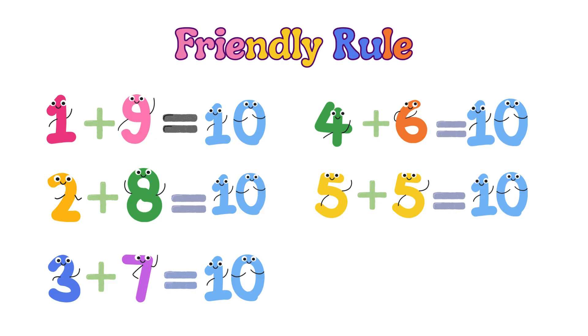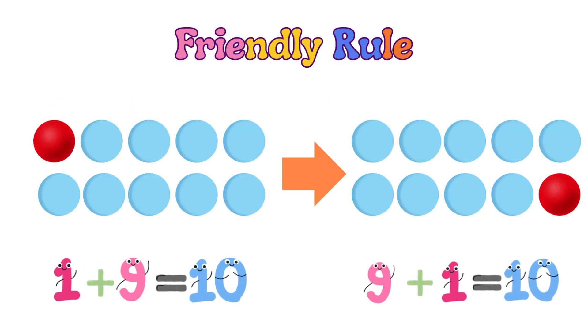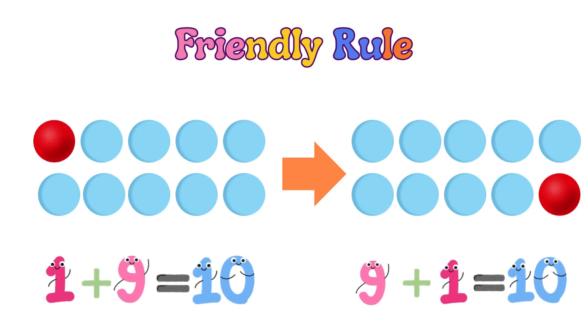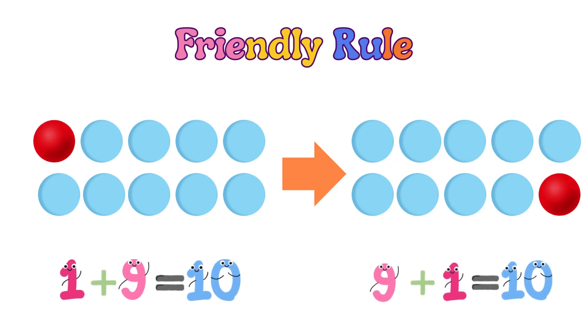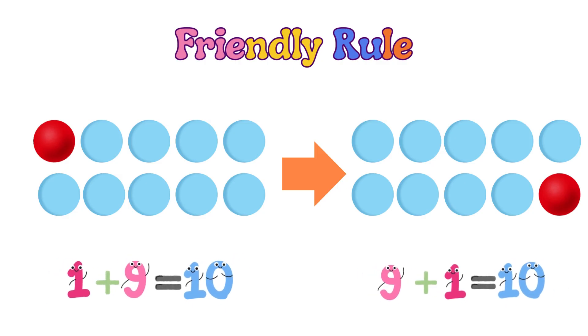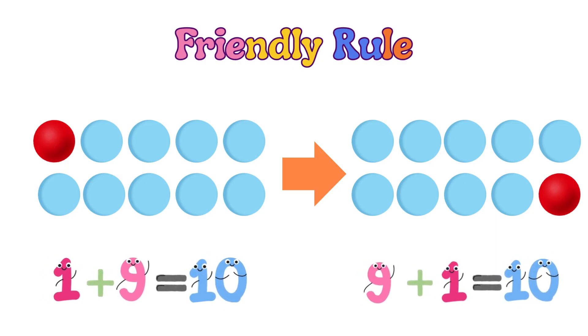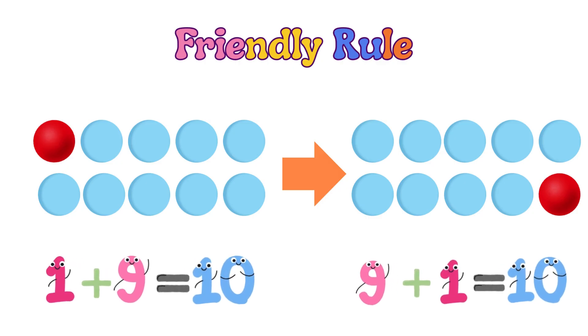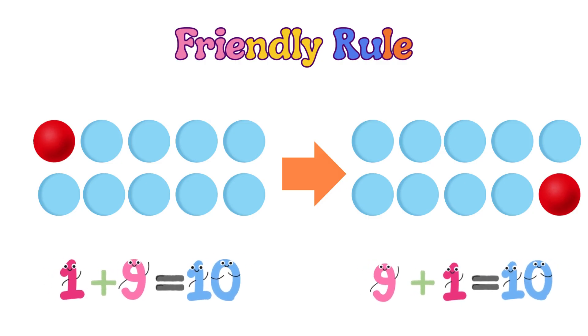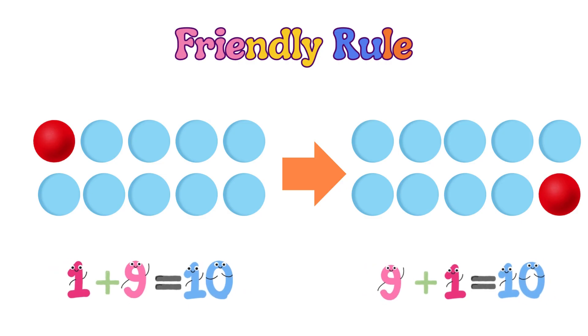The friends of 10 have a friendly rule. If you flip the numbers, you will still get 10. For example, let's flip 1 plus 9. It is the same as 9 blue circles on the right plus 1 red circle equals 10.